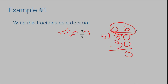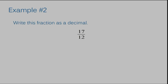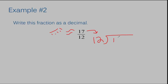Let's move on to example number two: write this fraction as a decimal. We're going to do the same thing. It's sunny and it's windy — your seventeen gets blown over. The sun and wind must always be on the left side; if you put them on the right side you're going to blow the wrong way. So your twelve stays where it is and the seventeen is what got blown over to the right.